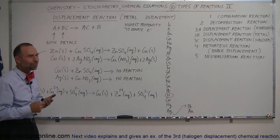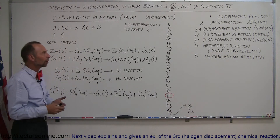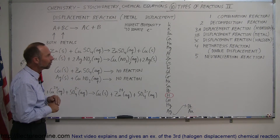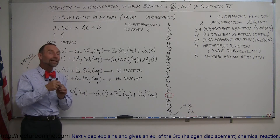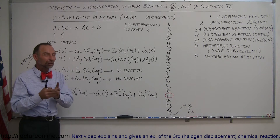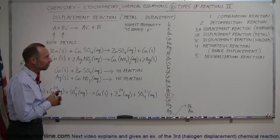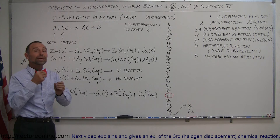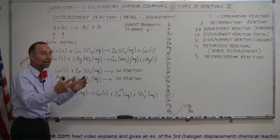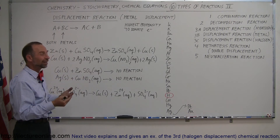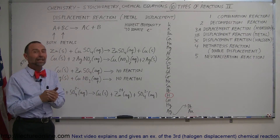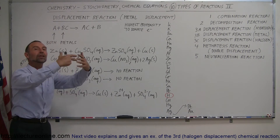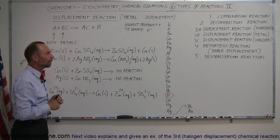Why does this happen? Metals are part of a series of elements where they're either more likely or less likely to donate electrons. If they're more likely to donate electrons, they're more likely to react with another ion and bond with it. If they're less likely to donate electrons, they will gladly give up their place and let the other metal do the bonding.